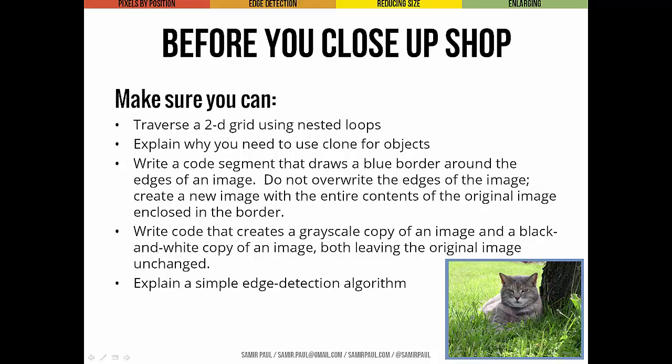Before wrapping up, make sure you can handle these ideas: traversing a 2D grid using nested loops; explaining why you need to use clone for objects rather than just saying APImage newImage equals oldImage; writing a code segment that draws a blue border around the edges of an image without overwriting the original content; writing code for a grayscale copy and a black-and-white copy of an image without changing the original; and explaining a simple edge detection algorithm like the one we looked at today.